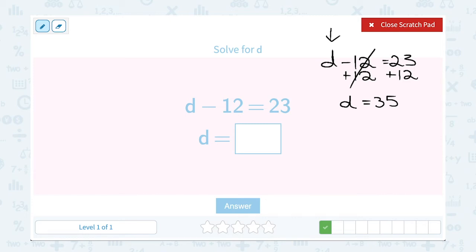If you want to check it, you can even do a mental math check instead of writing it all the way out like we did last time. You can just say, 35 minus 12, does that give me 23? And yes, 35 minus 12 is 23. So that means we must have had the right answer.